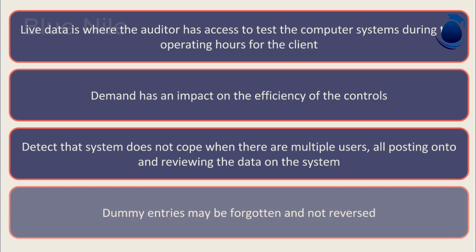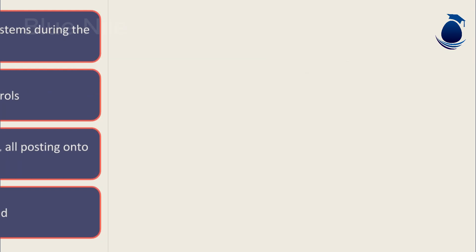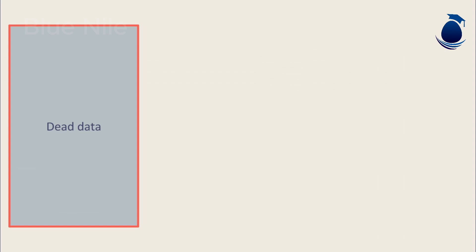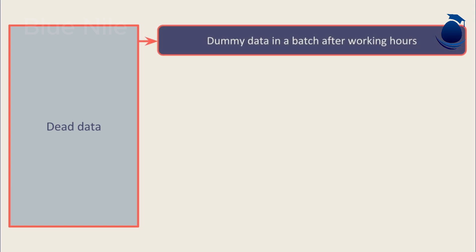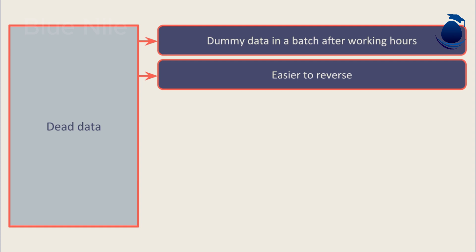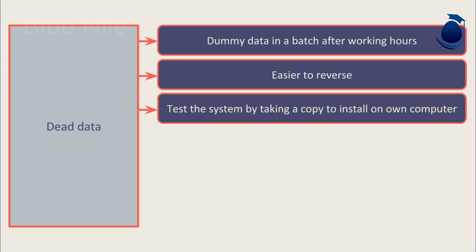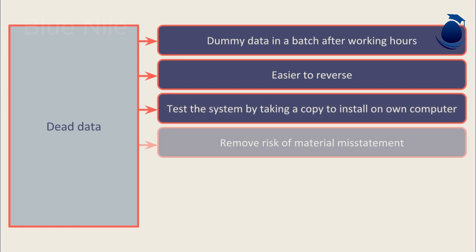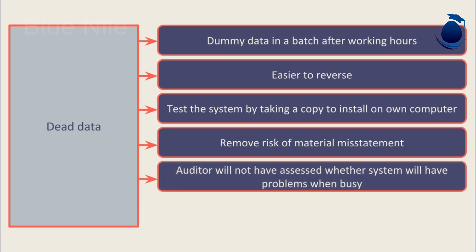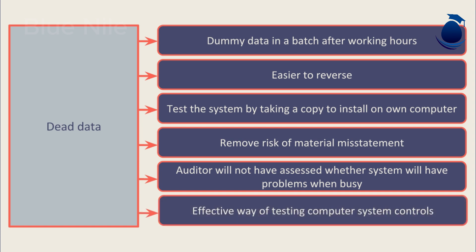The drawback of live data is that dummy entries may be forgotten and not reversed — there is nothing more embarrassing than the auditor being responsible for a misstatement detected in the following year's audit. Dead data is where the auditor enters dummy data into a batch after working hours, which is easier to reverse. Alternatively, the client may permit the auditor to test using a copy of the system installed on their own computer, removing the risk of leaving misstatements, though the auditor will not assess whether the system struggles when busy.